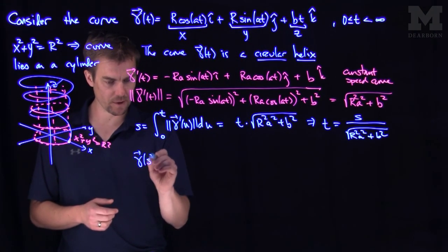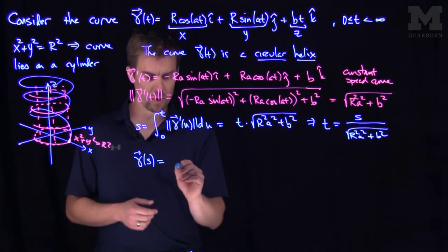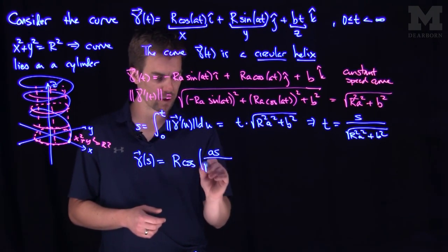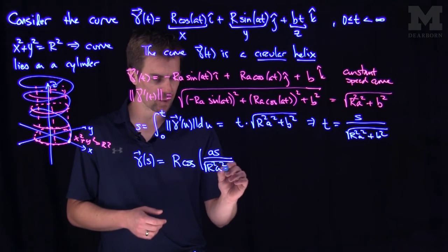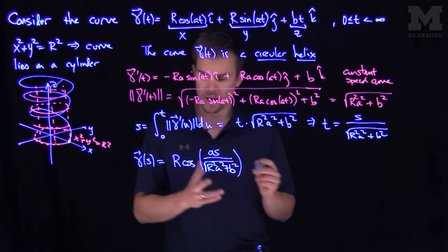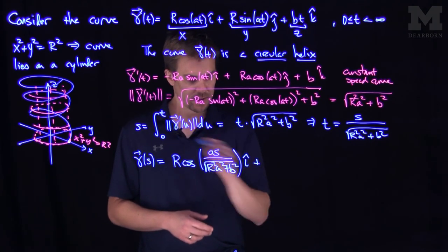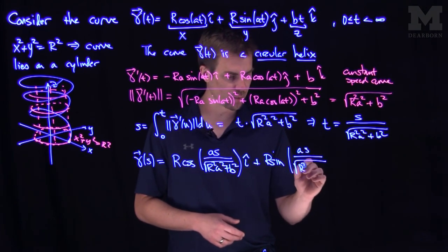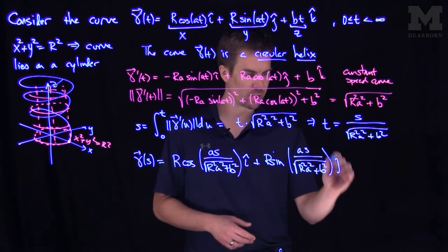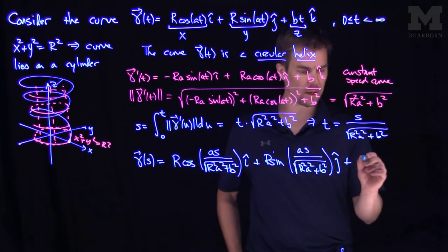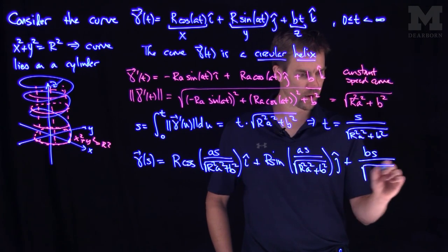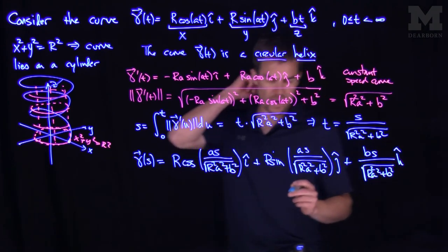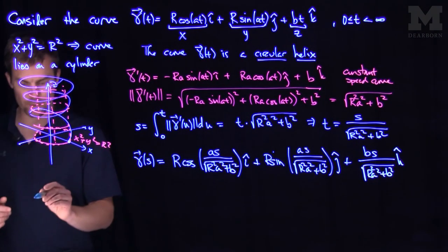Re-parameterizing our helix, gamma of s equals r cosine(as / sqrt(r²a² + b²)) î plus r sine(as / sqrt(r²a² + b²)) ĵ plus b·s / sqrt(r²a² + b²) k̂. In particular, this allows us to compute the unit tangent vector T̂(s), which is the derivative of gamma with respect to s.